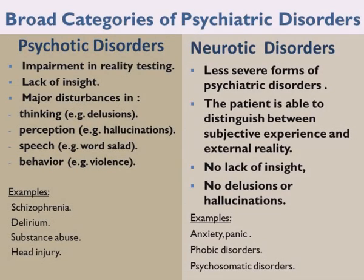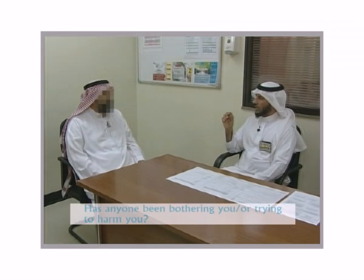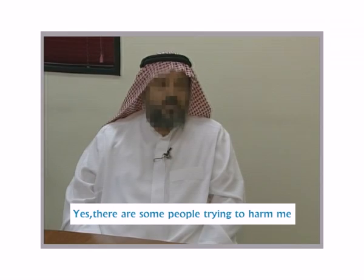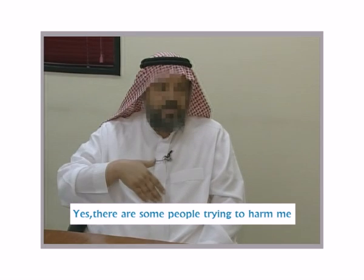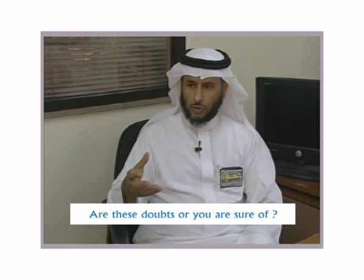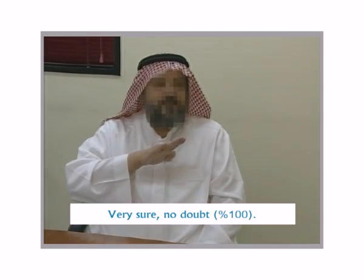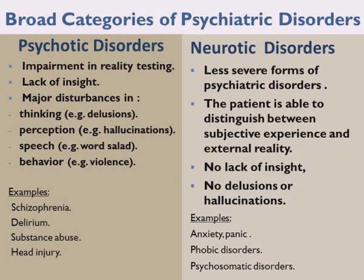Psychosis involves major disturbances in thinking — for example, delusions; in perception — for example, hallucinations; in speech — for example, word salad; and in behavior — for example, violence. Examples of psychosis include schizophrenia, delirium, substance abuse, and head injury leading to psychotic features.